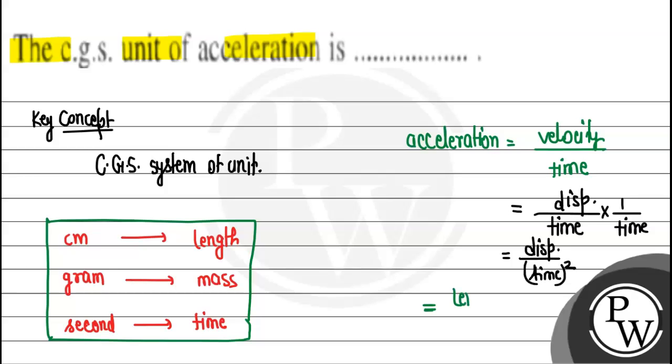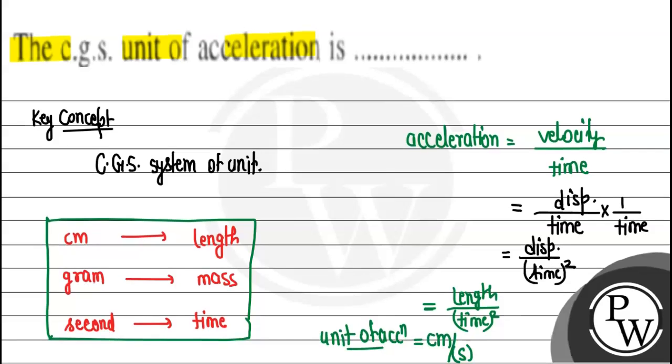So the unit of acceleration will be: unit of length is centimeter, unit of time is second. So centimeter per second square. So the CGS unit of acceleration is centimeter per second square. This is the answer for this portion.